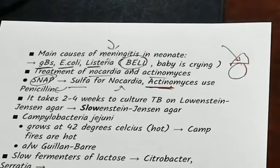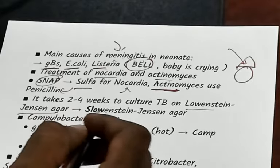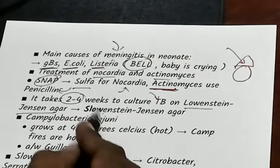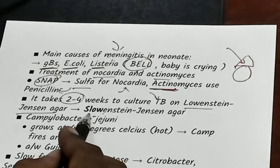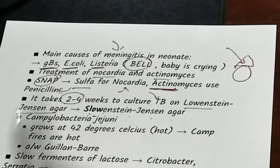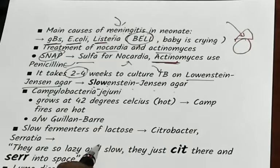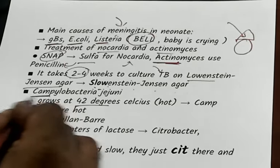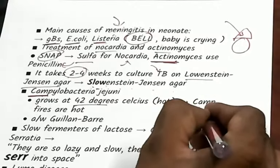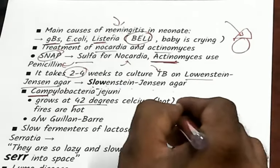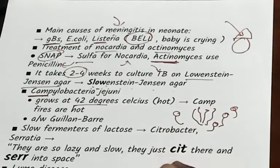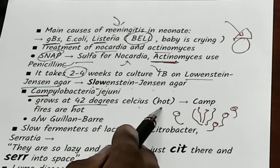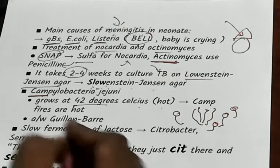If you use Löwenstein-Jensen agar, how long does it take for the TB bacillus to culture? Two to four weeks. For Campylobacter jejuni, it requires 42 degrees Celsius to grow — remember: camp → campfire, campfires are hot. Campylobacter jejuni grows at 42°C and is associated with poultry.